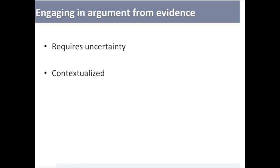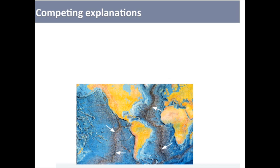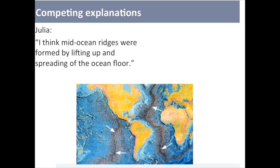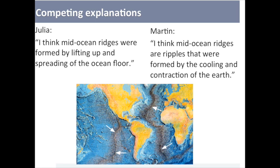To further understand how constructing explanations and engaging in argument from evidence are related, let's examine two competing explanations about the causes of mid-ocean ridges, which are shown in the map below. Julia says, I think mid-ocean ridges were formed by lifting up and spreading of the ocean floor. Martin says, I think mid-ocean ridges are ripples that were formed by the cooling and contraction of the earth.